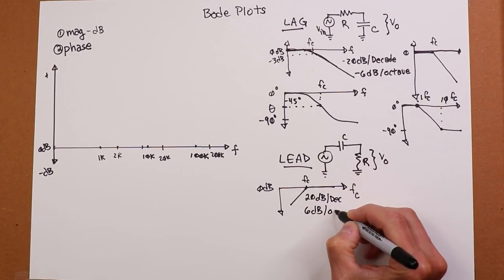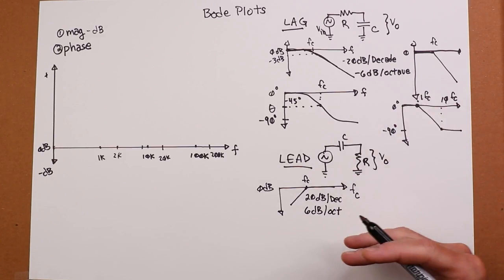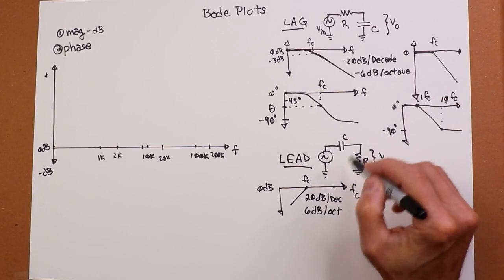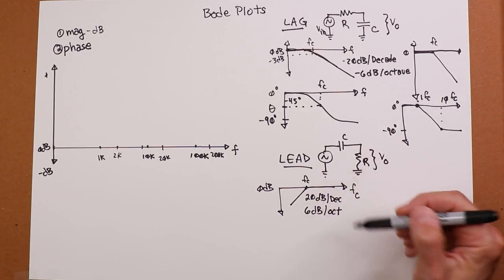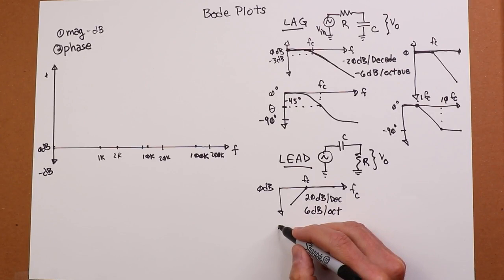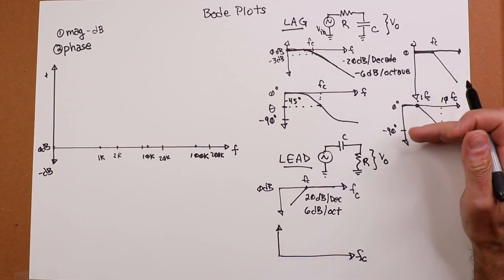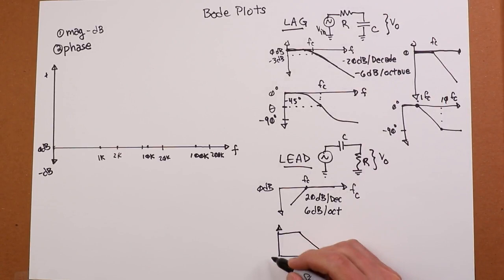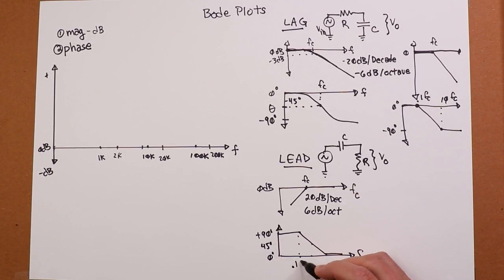So this is flat down to fc. And then it starts to drop off. Same rate, except it's positive: 20 dB per decade or 6 dB per octave. Now, the phase response is sort of shifted because at very low frequencies, the circuit's largely capacitive, but you're taking the signal across the resistor. So this appears to be leading, hence the name. And we would see that the phase response is essentially the same thing, but pushed up by 90 degrees.